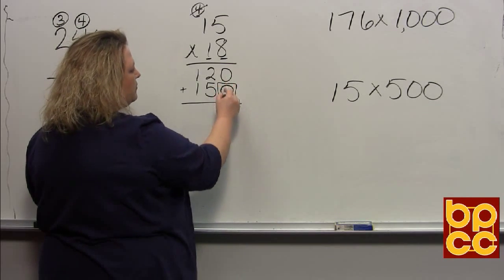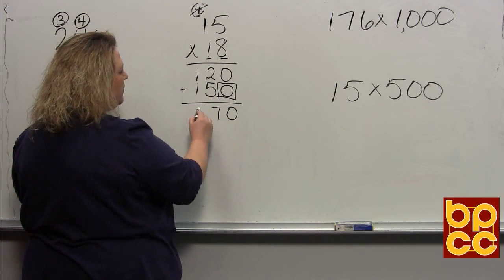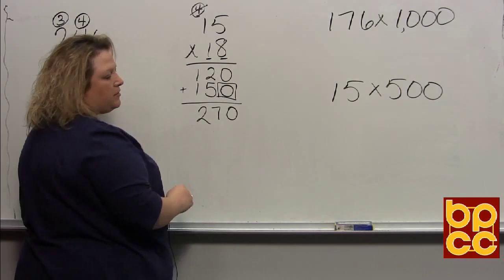Once you have multiplied your columns together, now we're going to add going down. So 0 plus 0 is 0, 2 plus 5 is 7, 1 plus 1 makes 2. So the answer is 270.